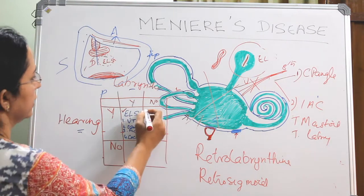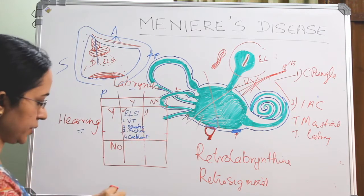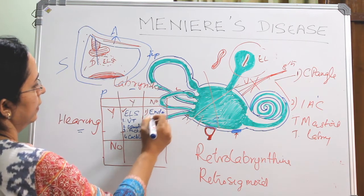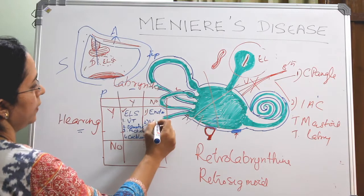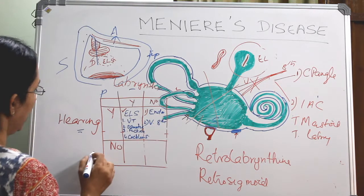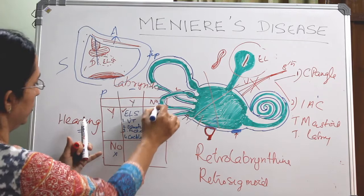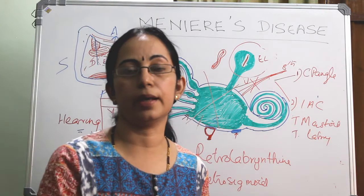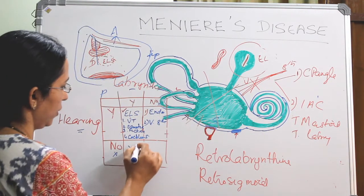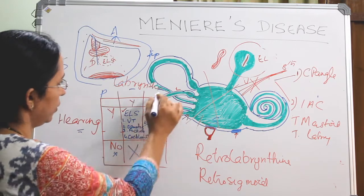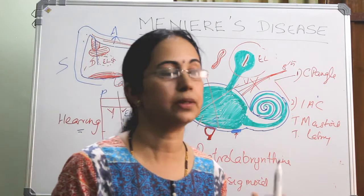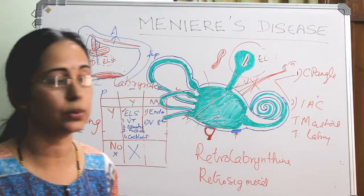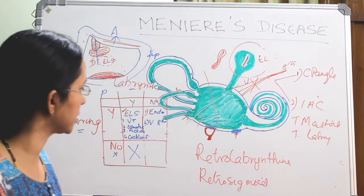So here come these two: ablation of the vestibular end organ and ablation of the vestibular component of the eighth nerve. Another category is hearing no and labyrinthine function no — total ablation. There is no combination of hearing loss with preserved labyrinthine function. For total ablation, there comes labyrinthectomy, translabyrinthine vestibular neurectomy, and also destruction of the Scarpa's ganglion.